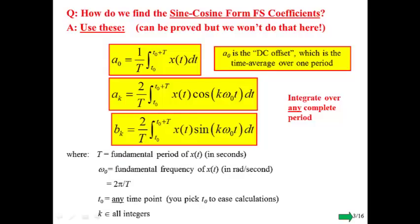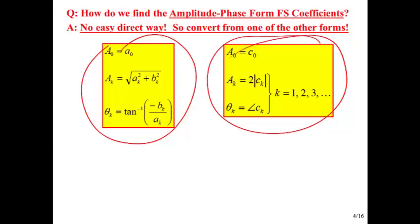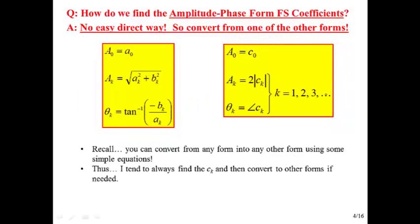How do we find it for the amplitude phase form? Well, you might think that you multiply by a cosine with a phase term, but nope, no such luck. Not very easy. So the easiest way is to convert from one of the other forms. We can convert from any one of these three forms. Once we have the coefficients in one form, we can convert it into any of the other forms. I always tend to find the c sub k's.